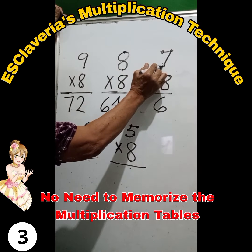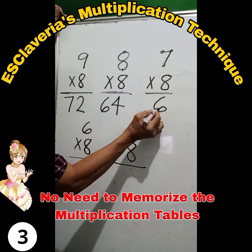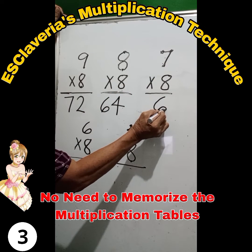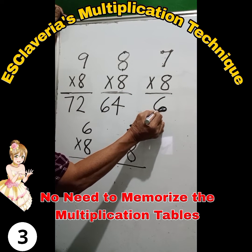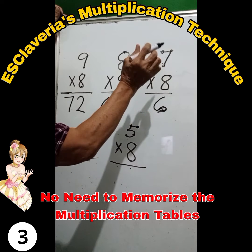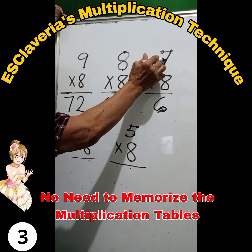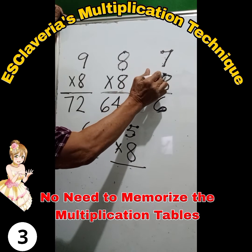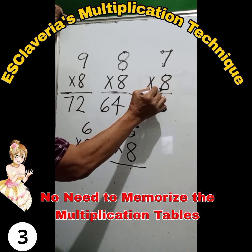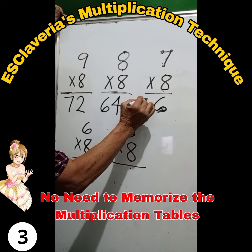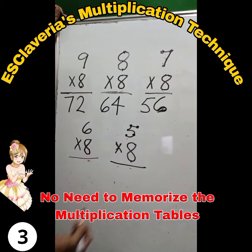Count 2, 4, 6. This is 6. Observe proper alignment. And then read the upper number: 7, 6, 5. The answer is 56.